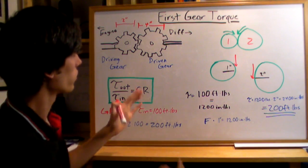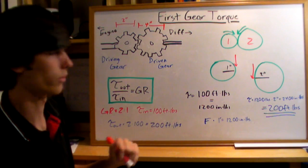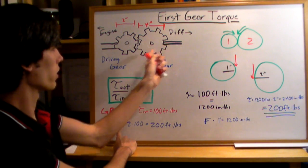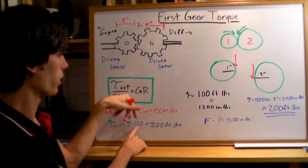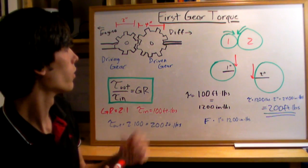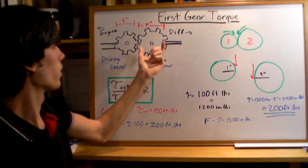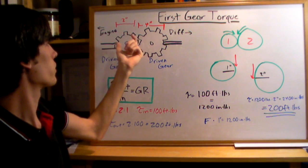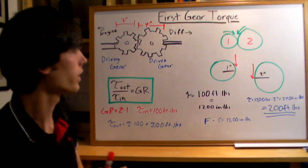The gear ratio is 2 to 1. Let's say our engine has a torque of 100 foot-pounds. The output torque going to the differential is going to be 2, the gear ratio, times the torque input, 100 foot-pounds, so that's 200 foot-pounds. Effectively, using a driven gear two times the pitch diameter of the driving gear, you're going to double the torque going to the wheels.